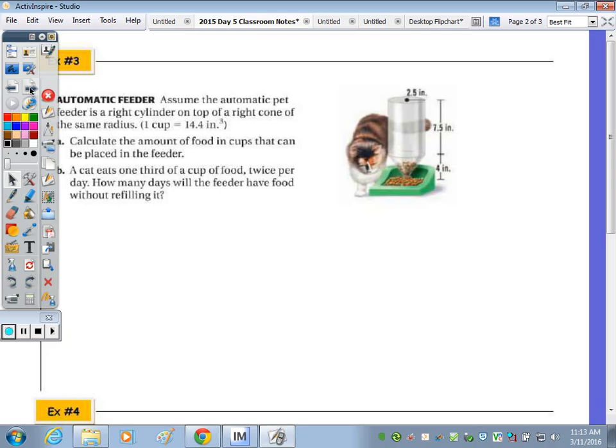In number three, we have an automatic pet feeder. It is in the shape of a cylinder and a cone, and it says that they have the same radius. Part A, we have to calculate the amount of food in cups that can be placed in the feeder. So that's how much it can hold. So for part A, we're going to look at volume.